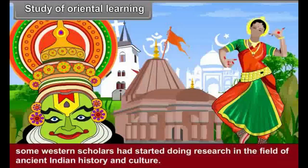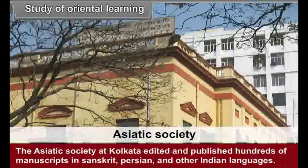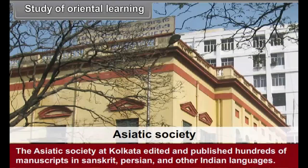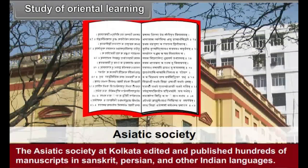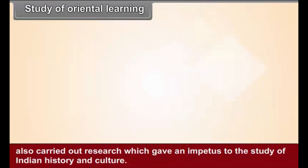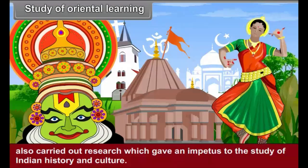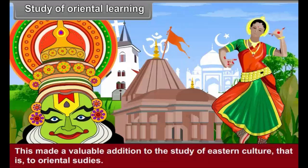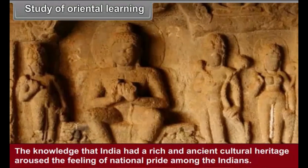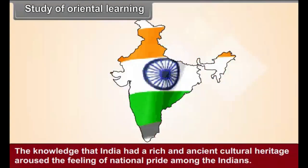In the latter half of the 18th century, some Western scholars had started doing research in the field of ancient Indian history and culture. The Asiatic Society at Kolkata edited and published hundreds of manuscripts in Sanskrit, Persian and other Indian languages. Indian scholars like Dr. Bhau Daji Lad and Dr. R.G. Bhandarkar also carried out research which gave an impetus to the study of Indian history and culture. This made a valuable addition to Oriental studies, and the knowledge that India had a rich and ancient cultural heritage aroused the feeling of national pride among the Indians.